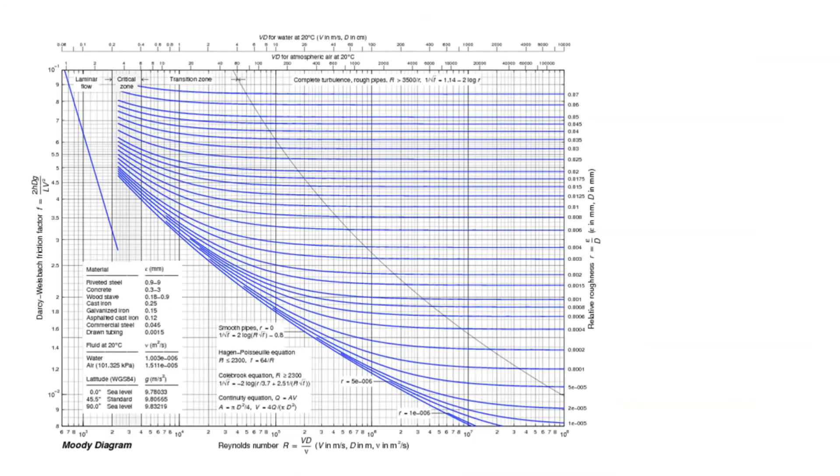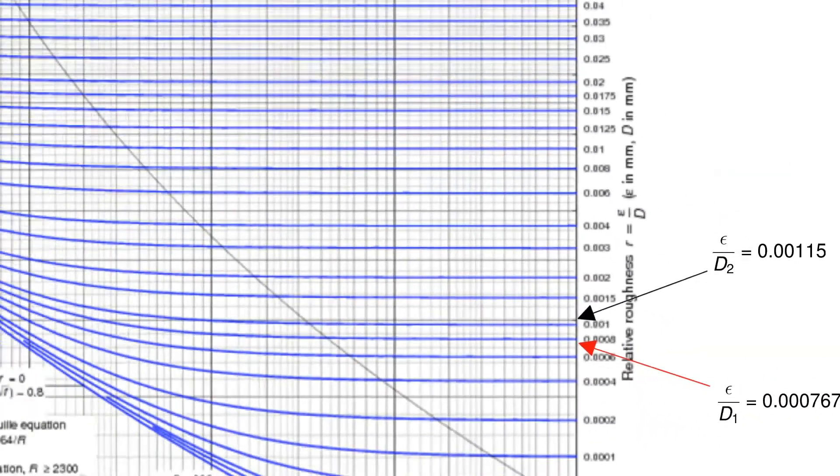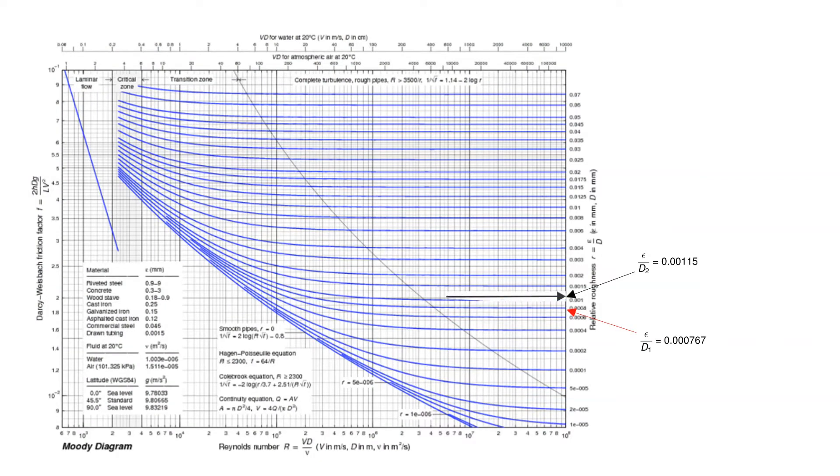The approximate relative roughness curves for both of the pipes are noted. Since we have to guess friction factors for each pipe, let's start with friction factors that are valid over a wide range of Reynolds numbers. We select a friction factor that is valid over the flat or horizontal portion of the relative roughness curves which occur at the higher Reynolds numbers.